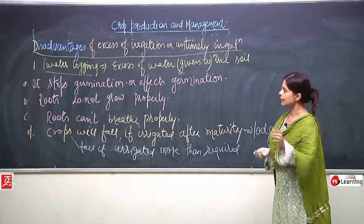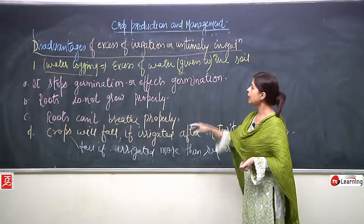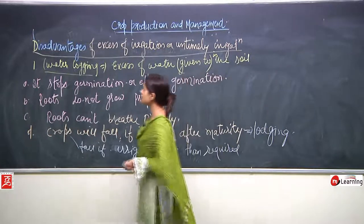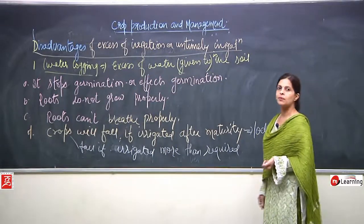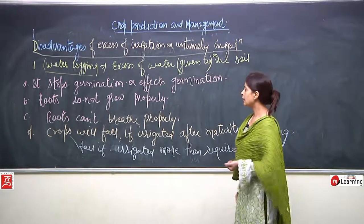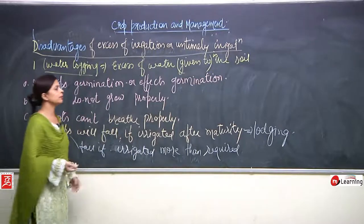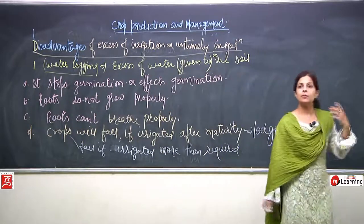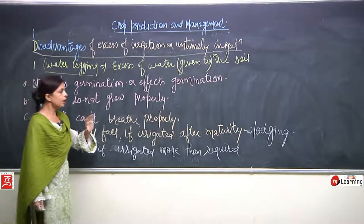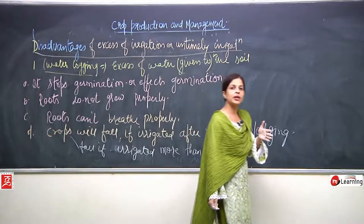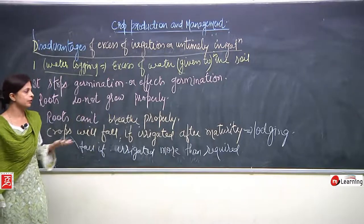We are studying disadvantages of excess irrigation or untimely irrigation. Water logging means when soil has more water. First, it stops germination. Roots do not grow properly. Roots can't breathe - aeration is affected. Crops fall if irrigated after maturity. If crops are strong enough they can resist, otherwise it causes severe damage to the crops and to the farmer.